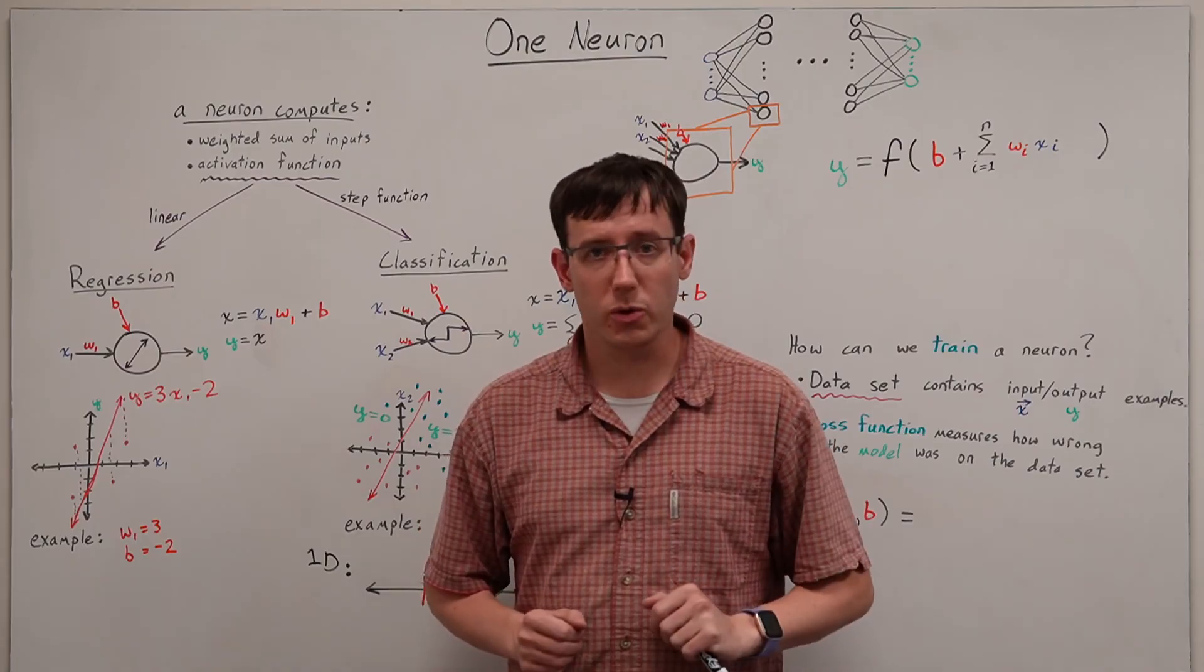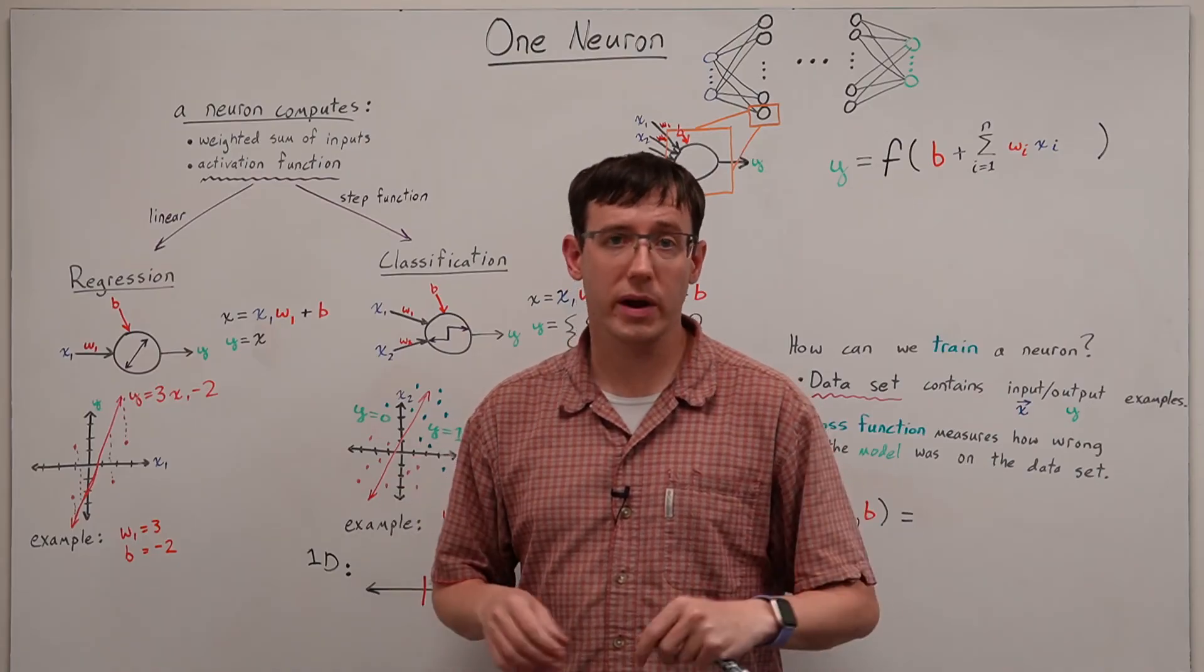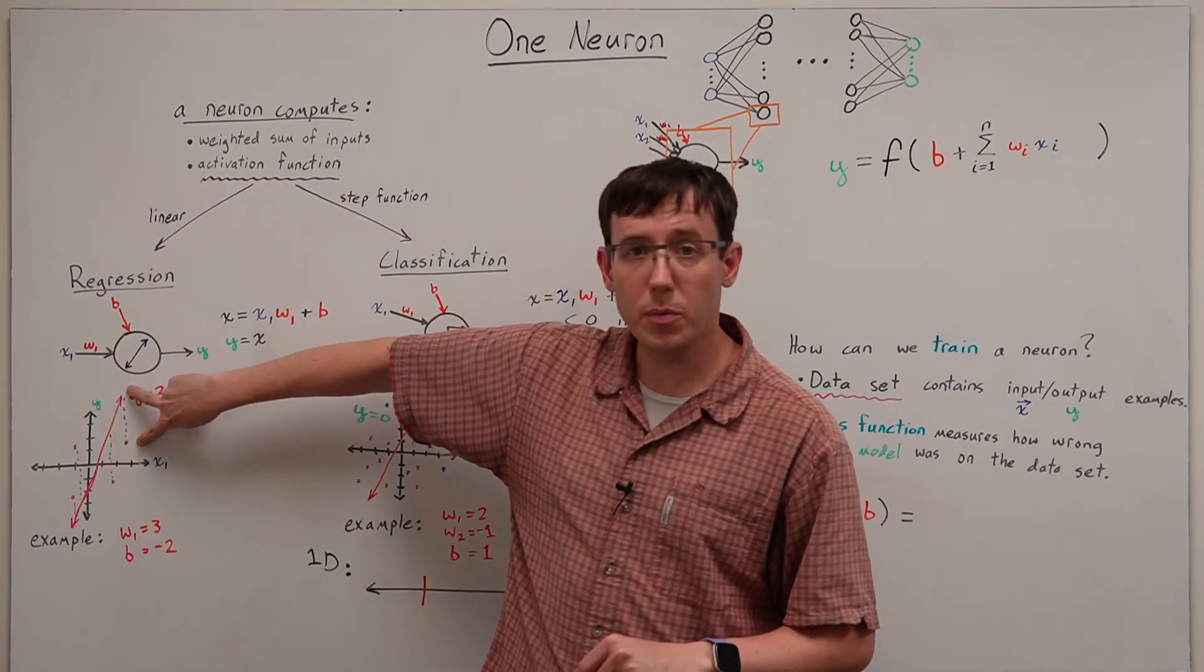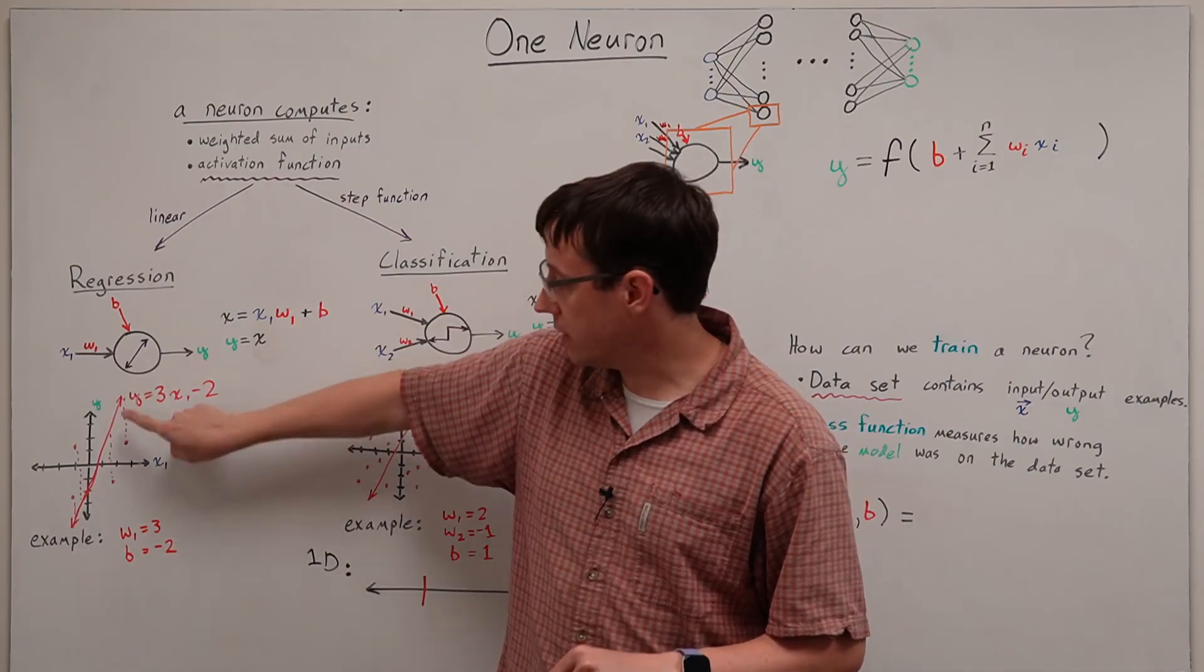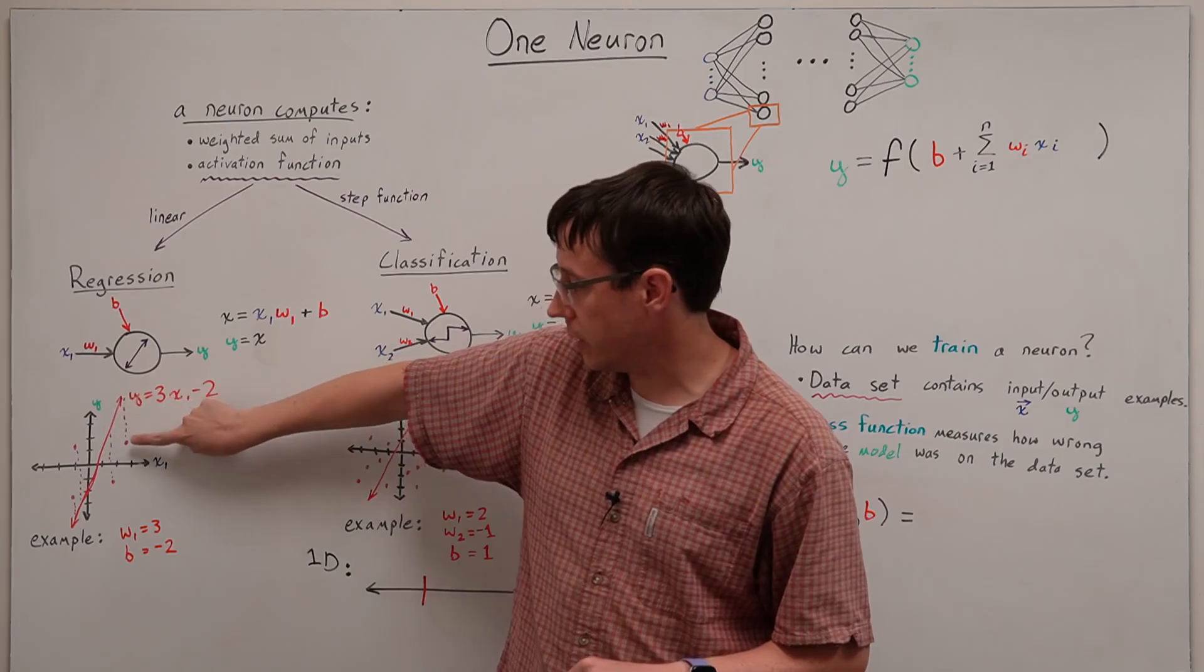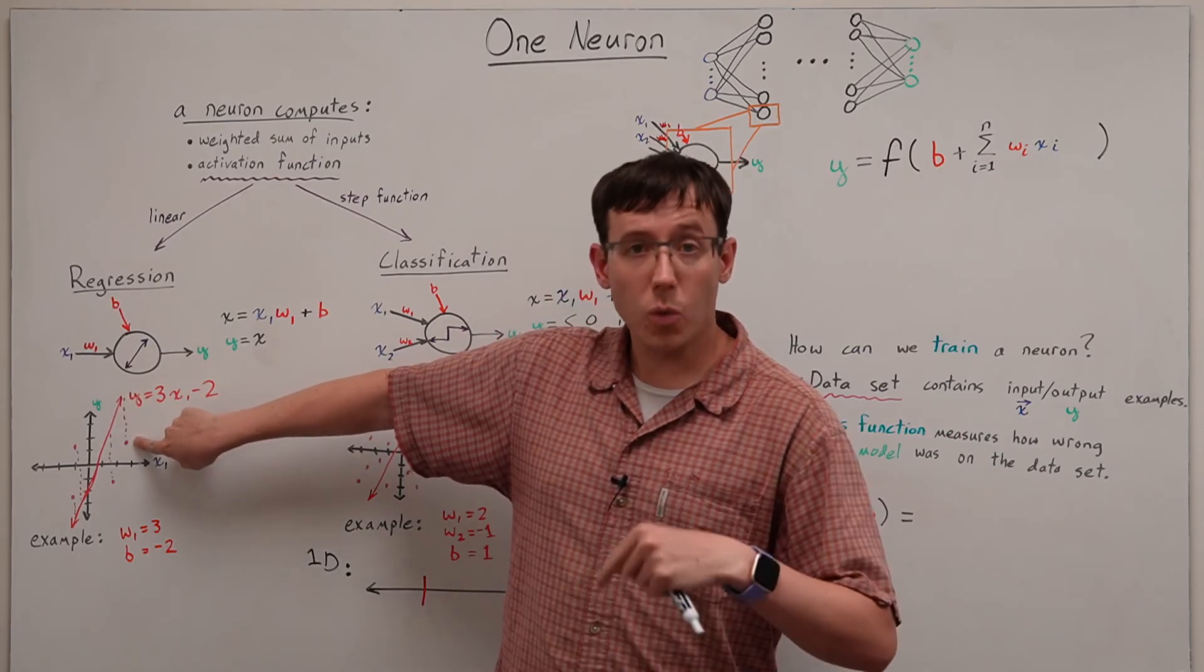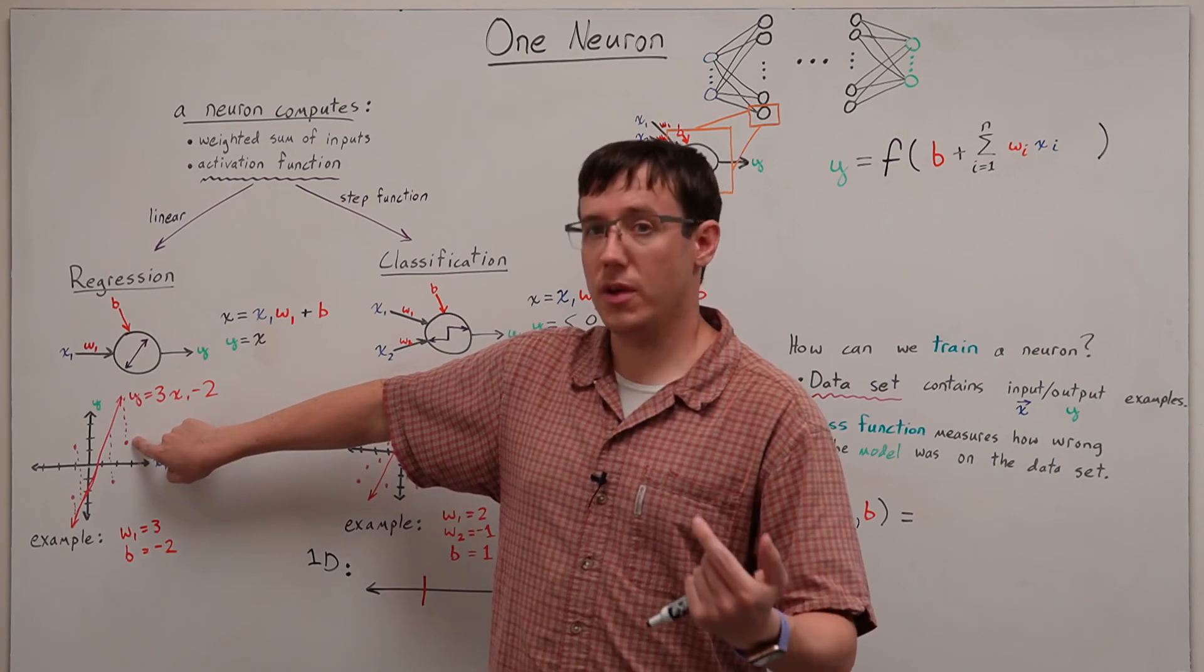And the first loss function we will consider is the sum of squared errors. That is, for each data point in the model, we'll take the difference between what the model predicted and what we should have gotten, square that difference, and sum them up.